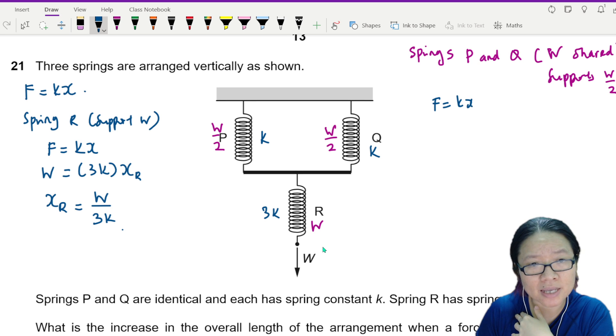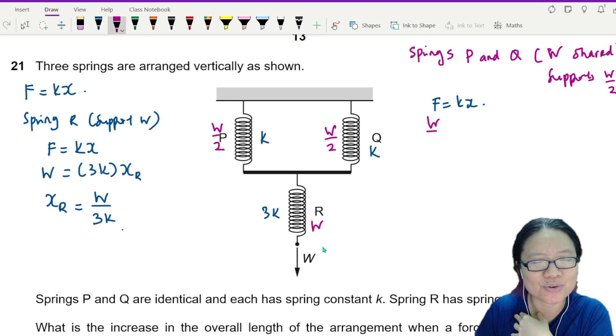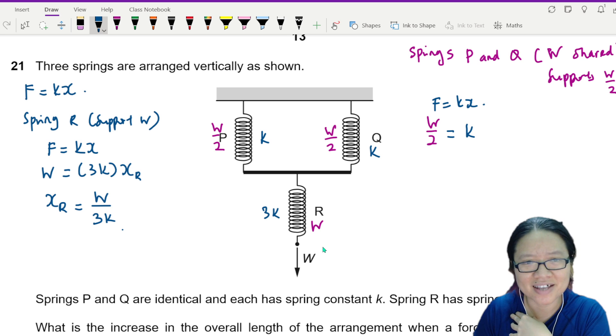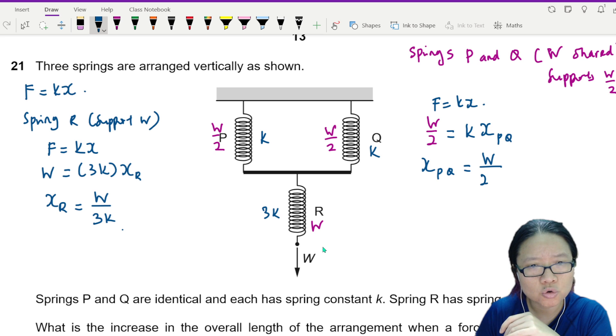I'll use F is equal to KX again. But right now, my force is only W over 2. Chill bro. I only carry half of the load. Then now this is KX. I'll call this the extension of the spring PQ. So the extension of the spring PQ will be equal to W over 2K.